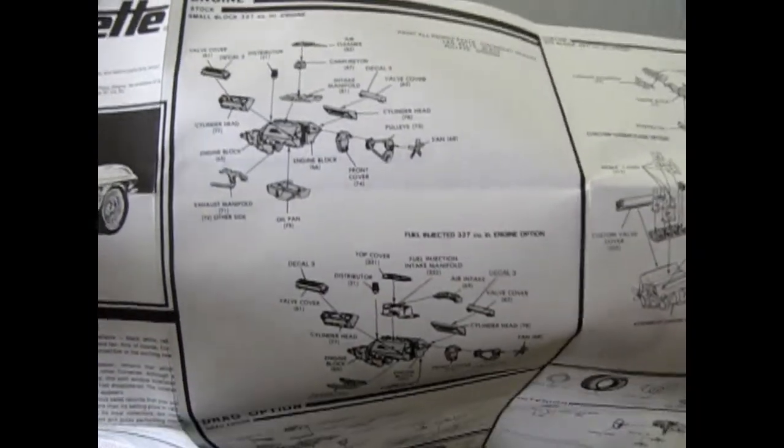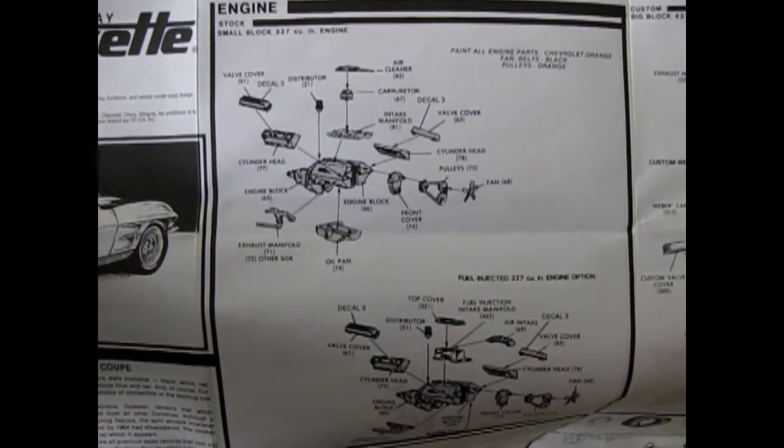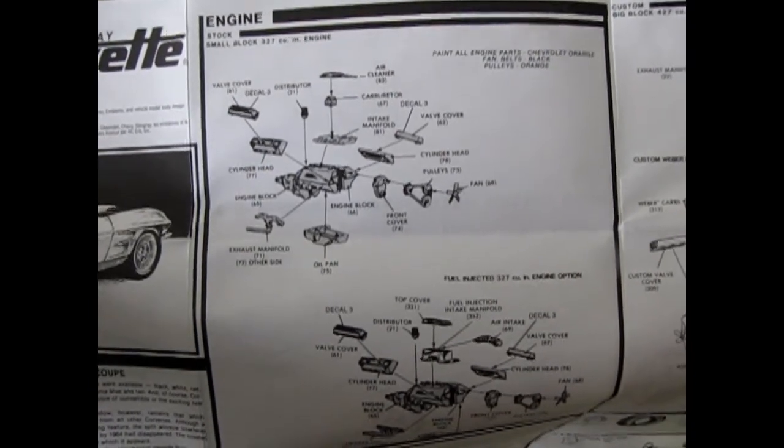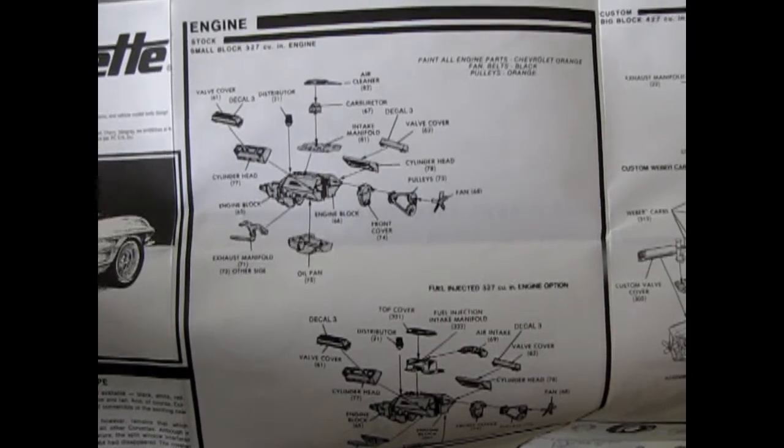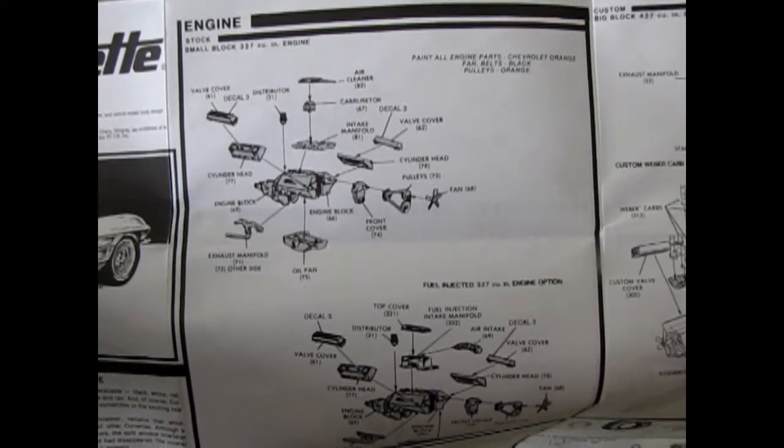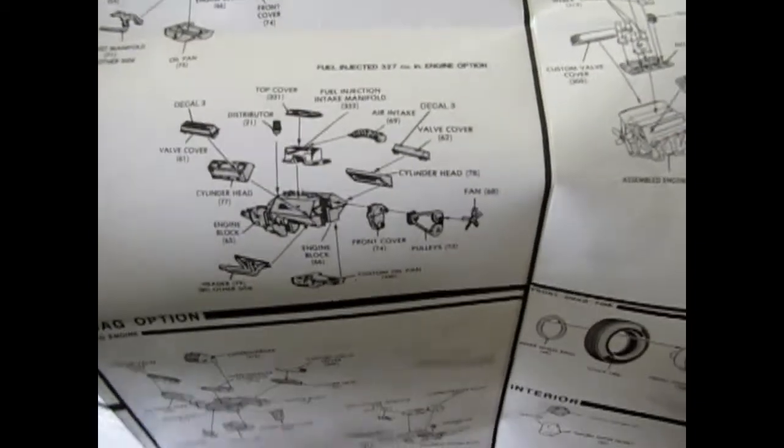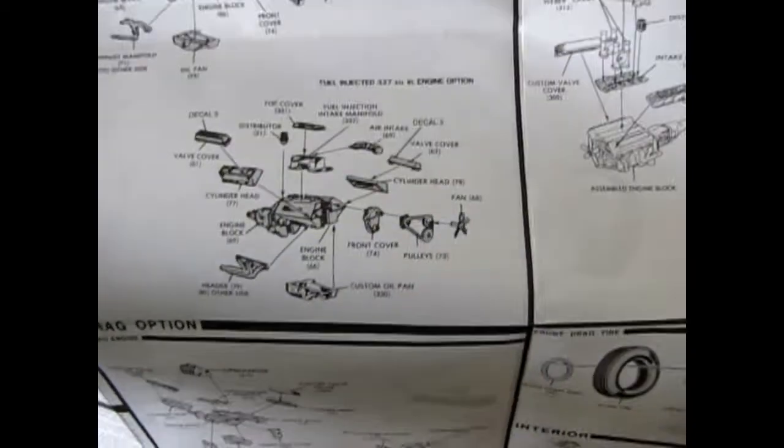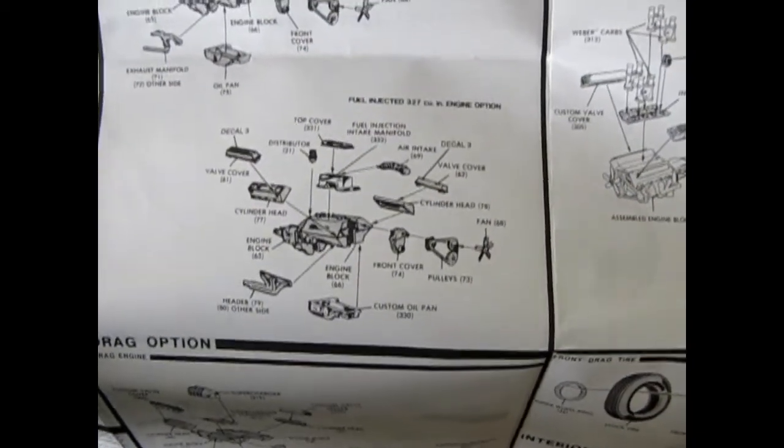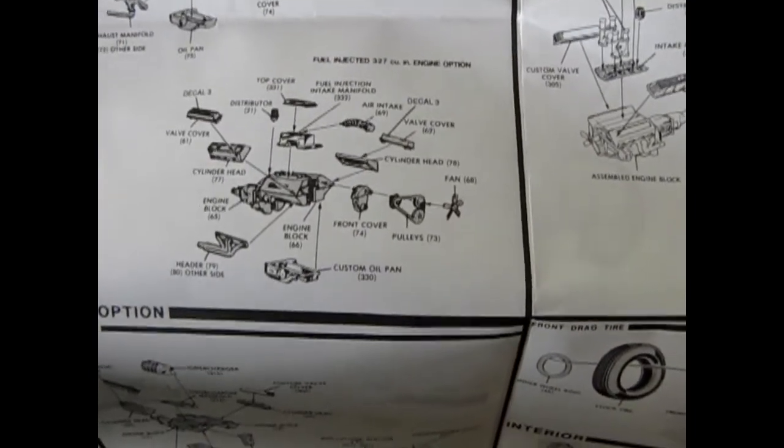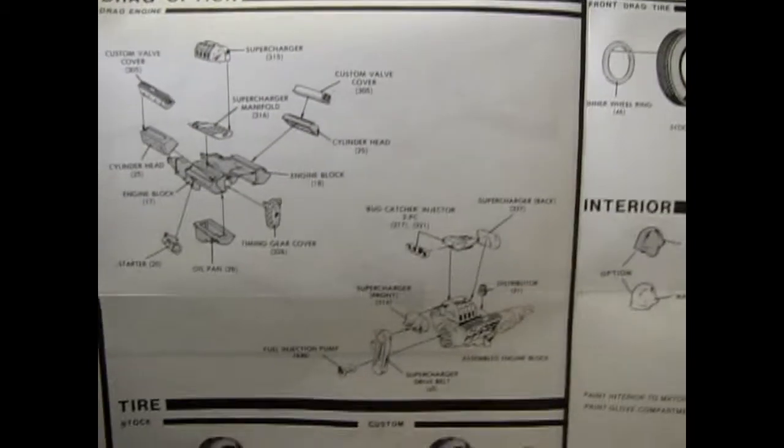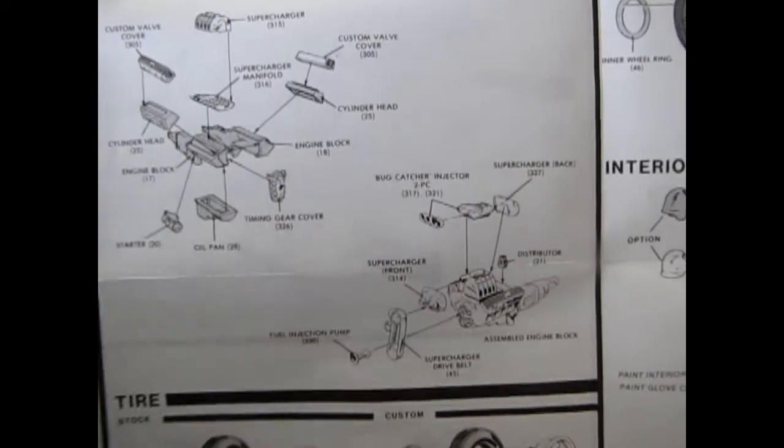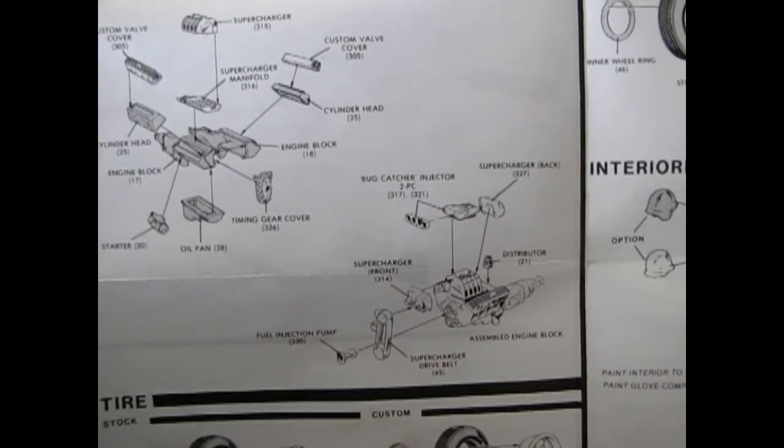You get two engine choices: the small block 327 cubic inch with the air cleaner four barrel carburetor - paint all engine Chevrolet orange, fan belts black, pulleys orange - and also your choice of the 327 cubic inch fuel injected motor. I've actually taken this engine and put it into a '57 Chevy because they had that intake back in the day.